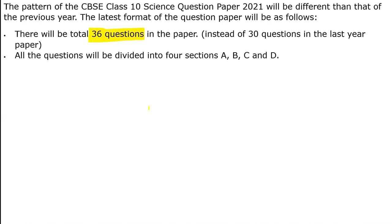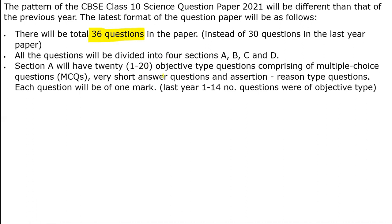All the questions will be divided into four sections: A, B, C, and D. Section A will have questions 1 to 20, which are objective type — multiple choice, short answer, or assertion and reason type questions. All section A questions will carry just one mark. Last year there were 14 objective type questions, but this time please be careful — the assertion and reason type questions are very tricky and very good questions. The level of questions is very nice.